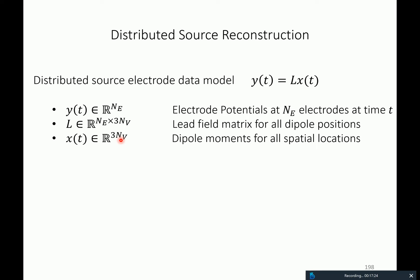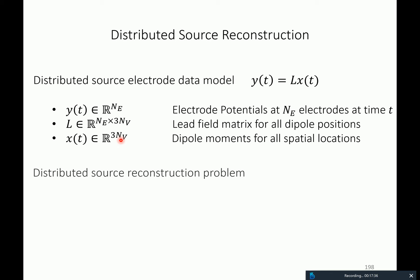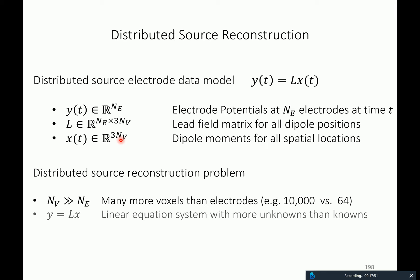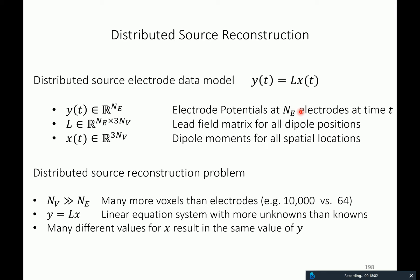Each dipole sits in a little 3D unit in the brain, which in cognitive neuroscience are usually referred to as voxels. The problem is that there are many more voxels than electrodes — many more dipole moment numbers than electrode numbers — so you get a linear equation system with more unknowns than data points. This means many different values of x reside in the same value of y, and constraints need to be specified.